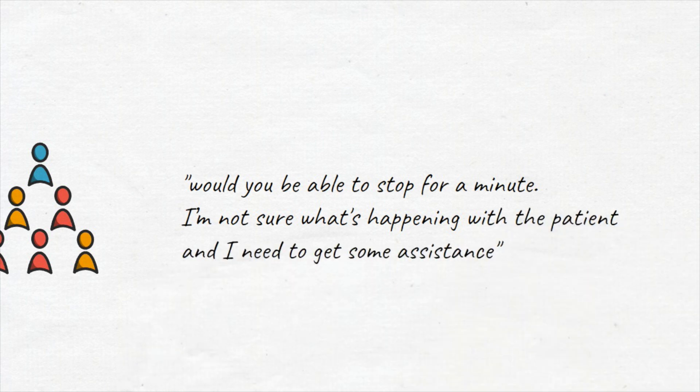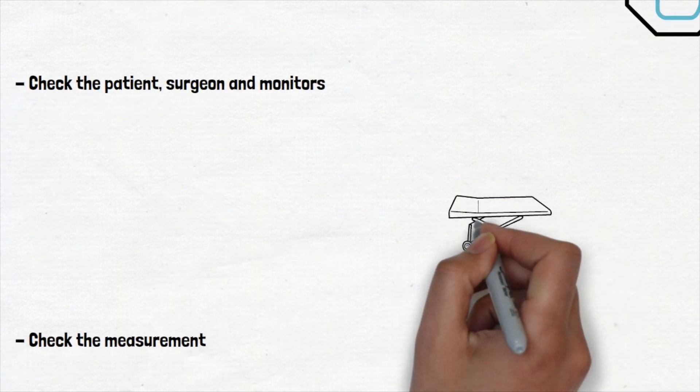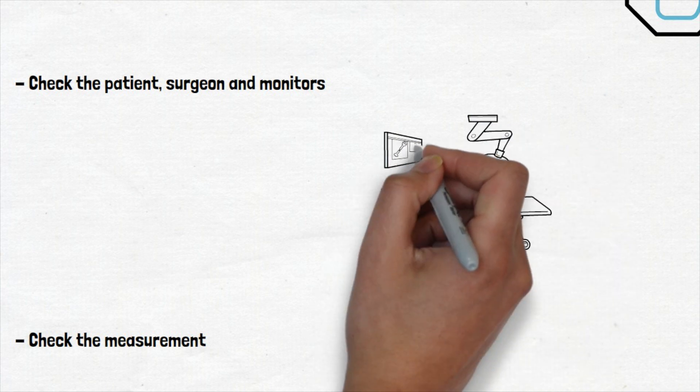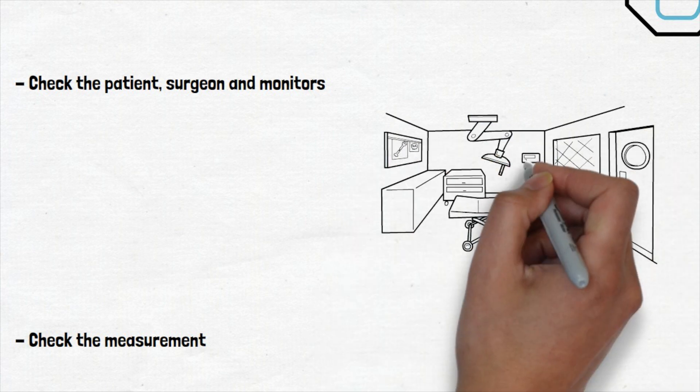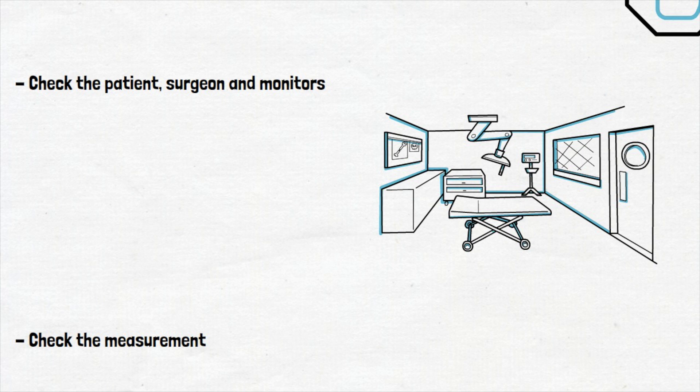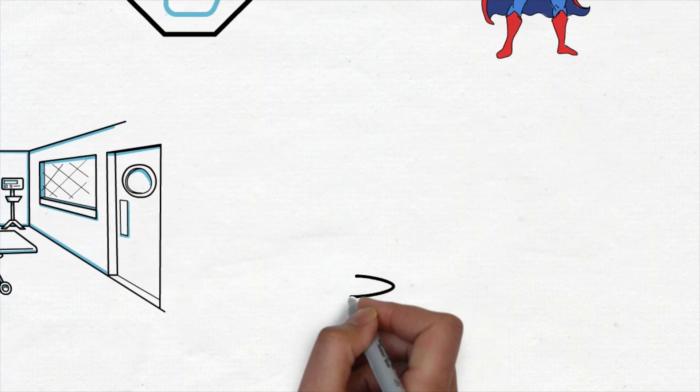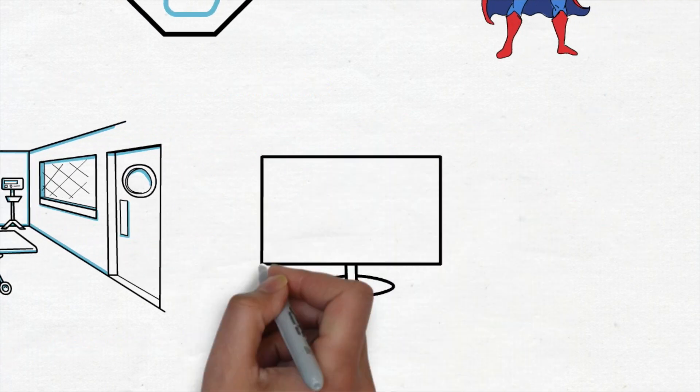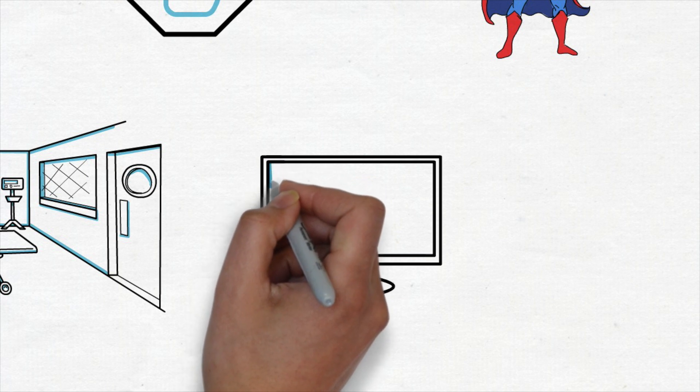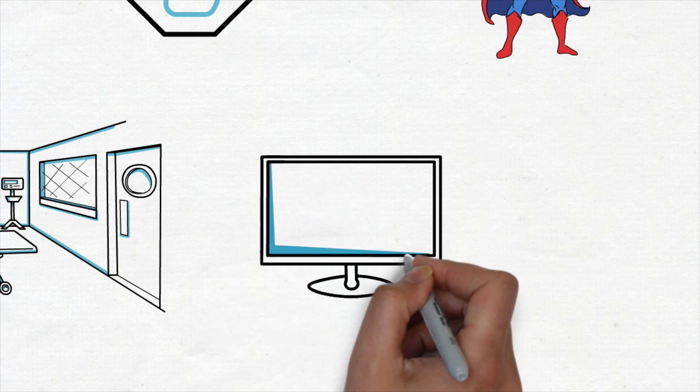The first thing you learn in medical school about patient assessment is to check your environment and do a general inspection. Anesthesia is no different. I try to take in all the information at hand by stepping back and looking at the monitors, the patient, and what the surgical field looks like.